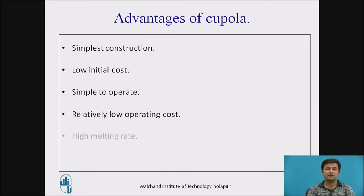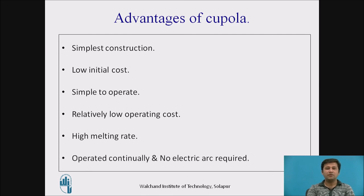A high melting rate is observed — from small tonnage to multiple tons of metal can be cast. The cupola can also be operated continuously, and no electric arc is required.